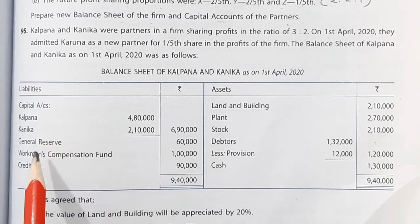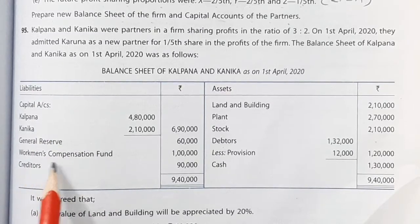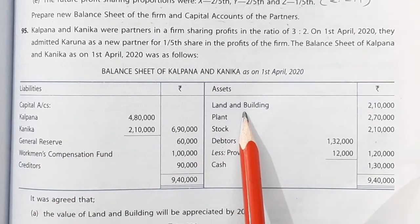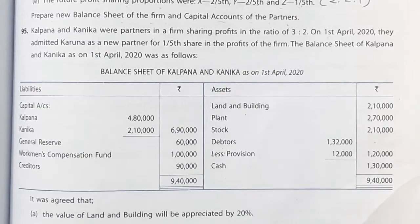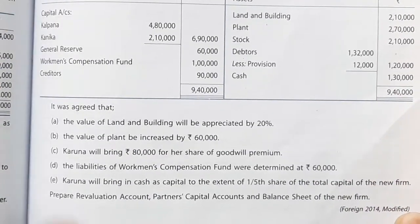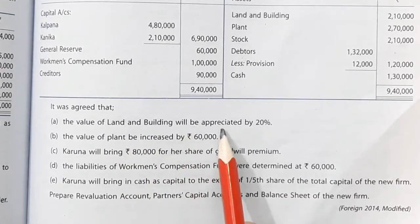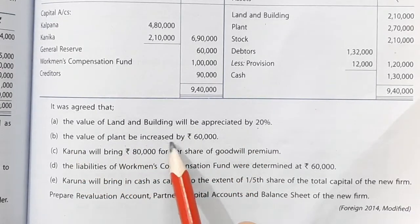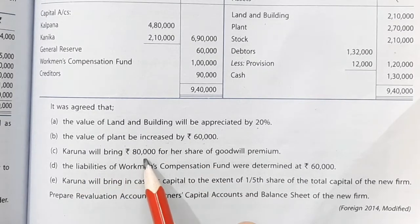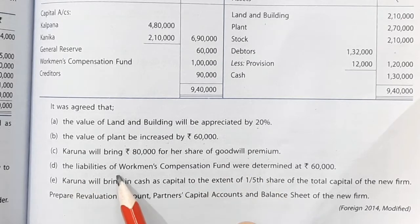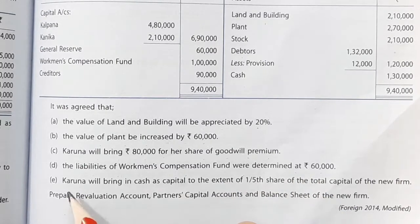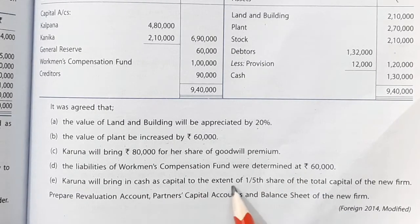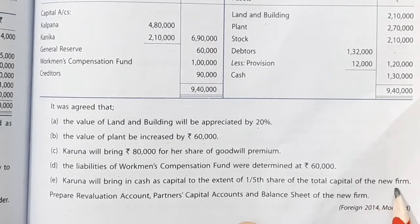The balance sheet shows capital, general reserve, workman's compensation fund, and creditors on the liabilities side. On the asset side we have land and building, plant, stock, debtors less provision, and cash. It was agreed that the value of land and building will be appreciated by 20%, the value of plant be increased by 60,000. Karuna will bring Rs 80,000 for her share of goodwill premium. The liabilities of workman compensation fund were determined at Rs 60,000. Karuna will bring in cash as capital to the extent of 1/5th share of the total capital of the new firm.